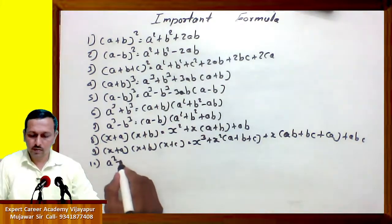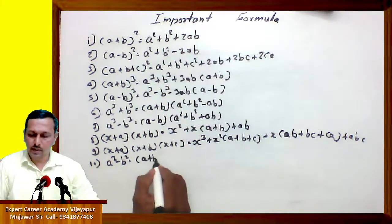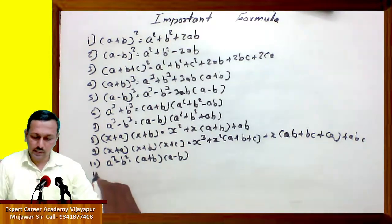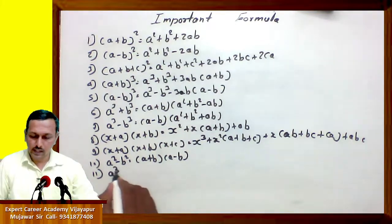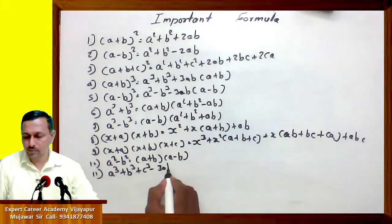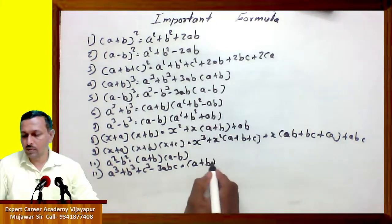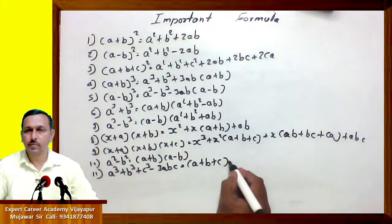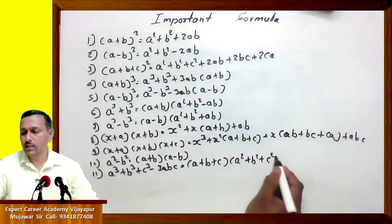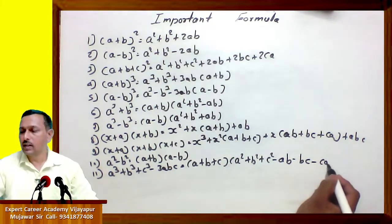Tenth one: a square minus b square equals (a plus b) into (a minus b). Eleventh one: a cube plus b cube plus c cube minus 3abc equals (a plus b plus c) into (a square plus b square plus c square minus ab minus bc minus ca).